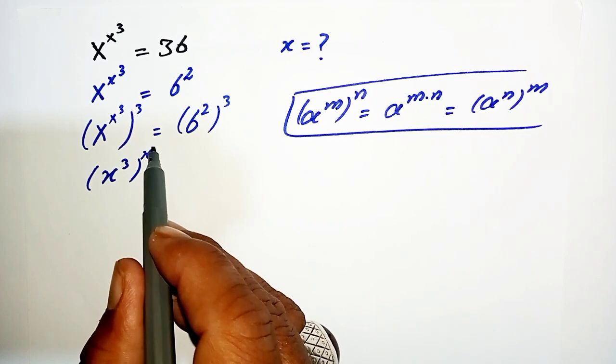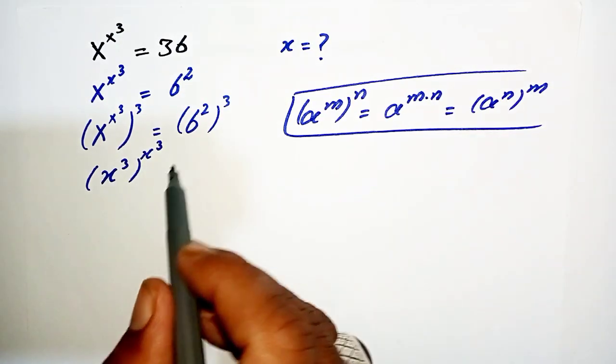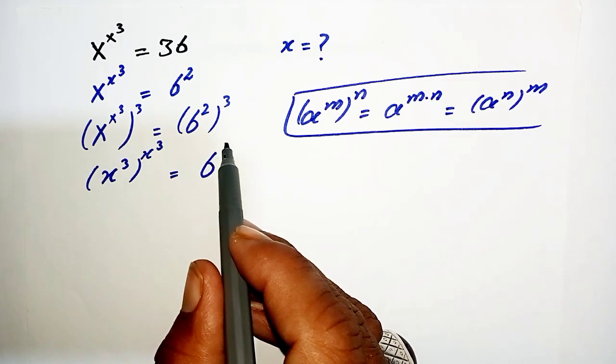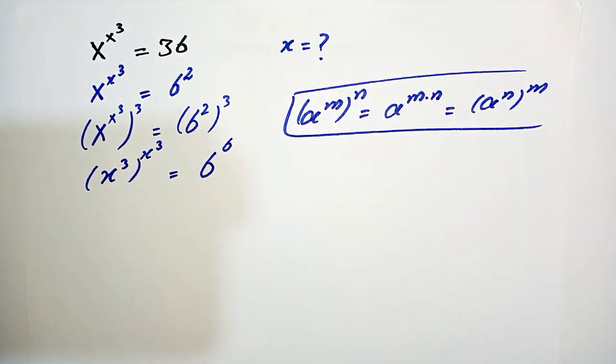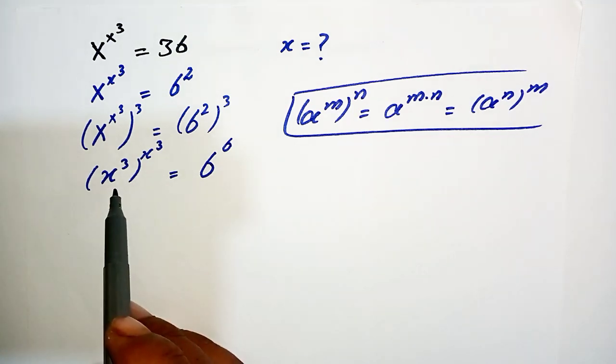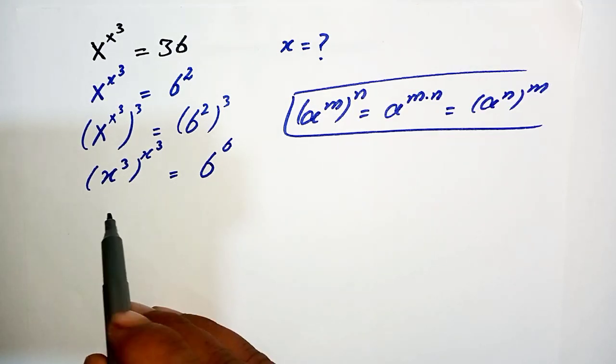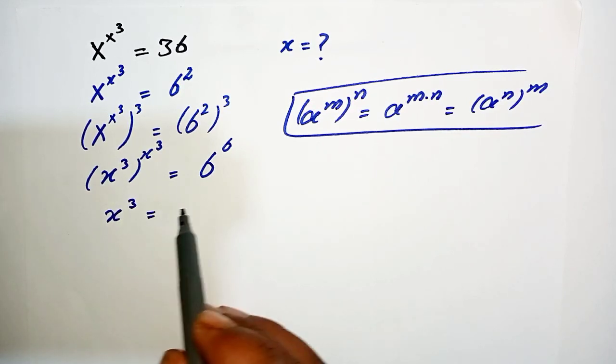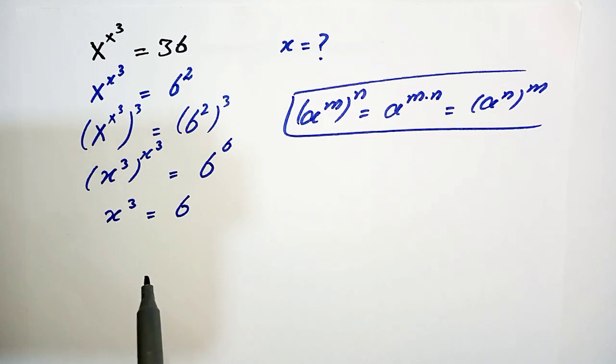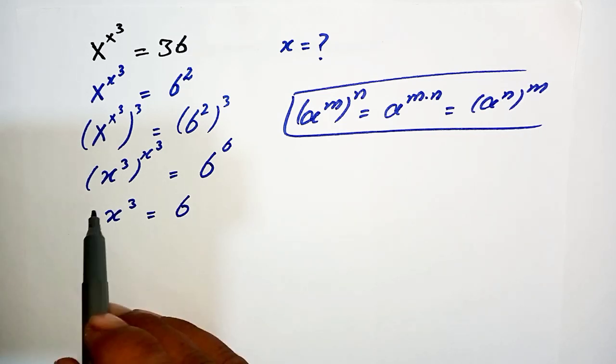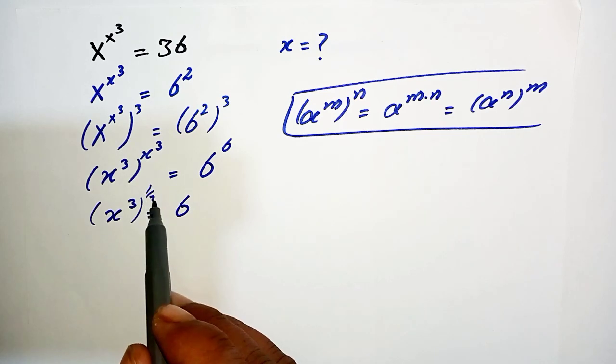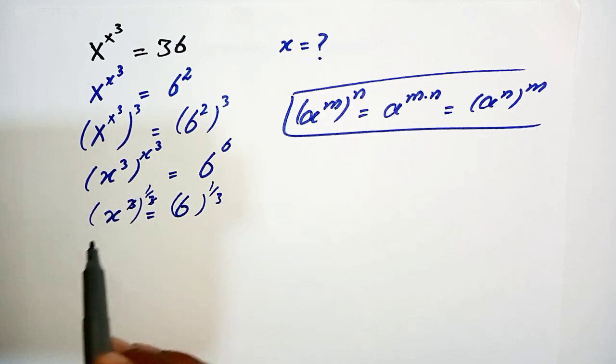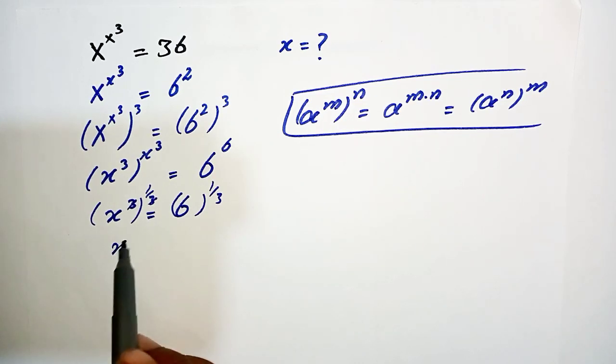Now if it has the same base, we can compare. We write it: x^3 = 6. Now we take a cube root on both sides, 1 over 3, and also on the right side. This 3 will cancel this 3.